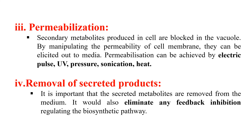The next way of increasing production is removal of secreted products. When the plant cells are growing, they release some waste products into the media, and these waste products interfere with the growth of new cells. So in order to increase production, we have to remove these secreted products so that they do not interfere with cell growth and do not cause any feedback inhibition. In order to eliminate feedback inhibition and increase cell growth, we have to remove these secreted products from the media.